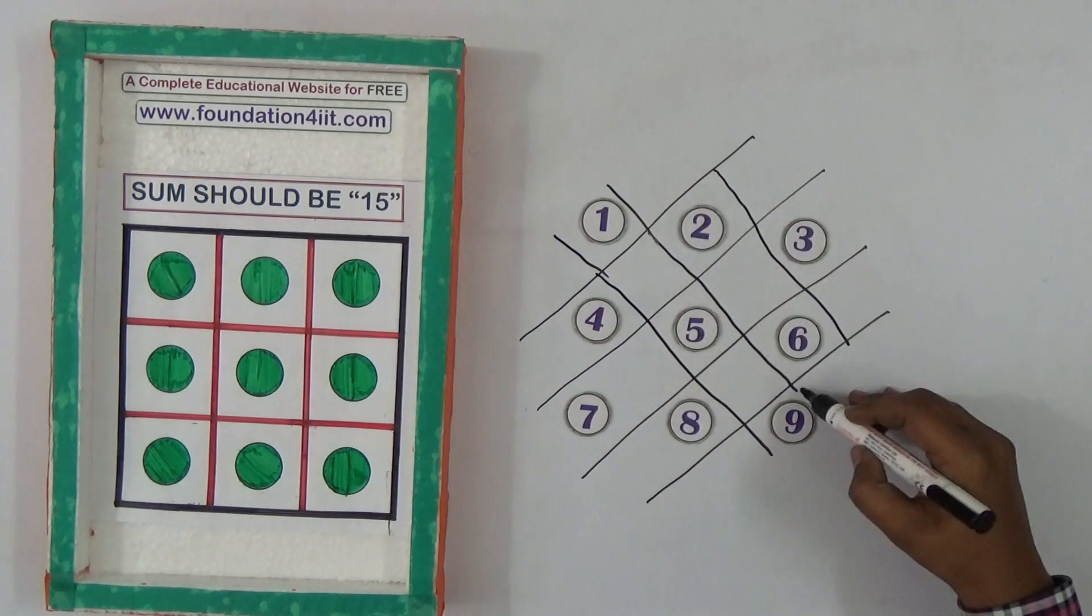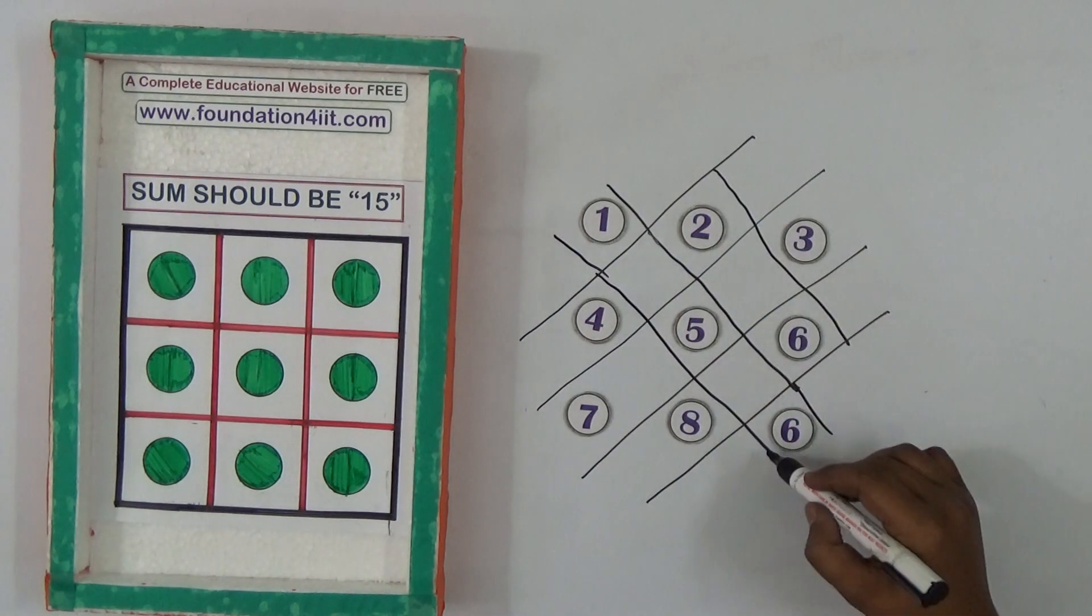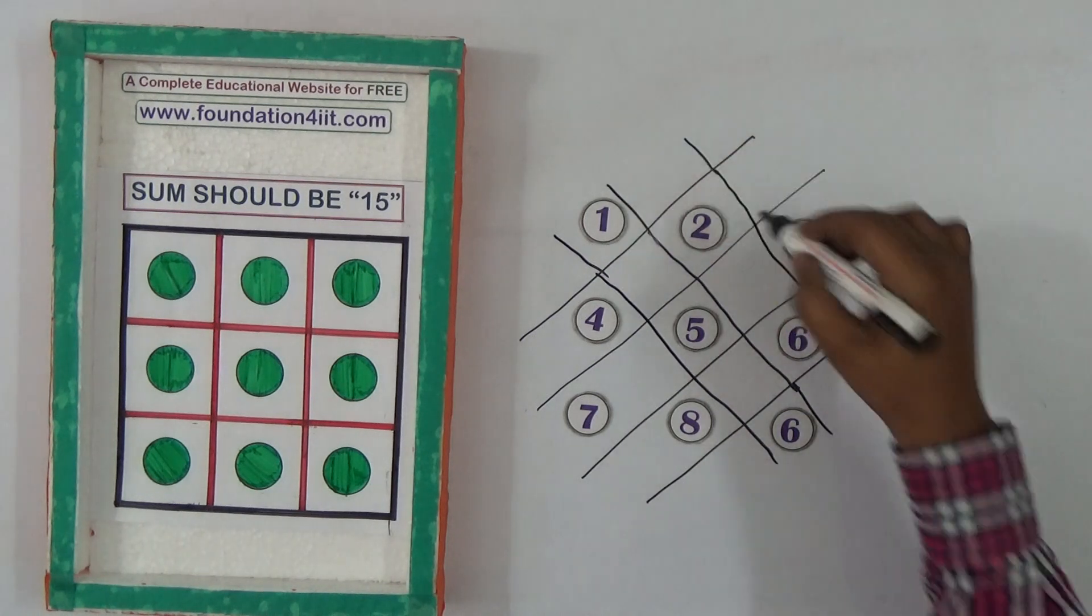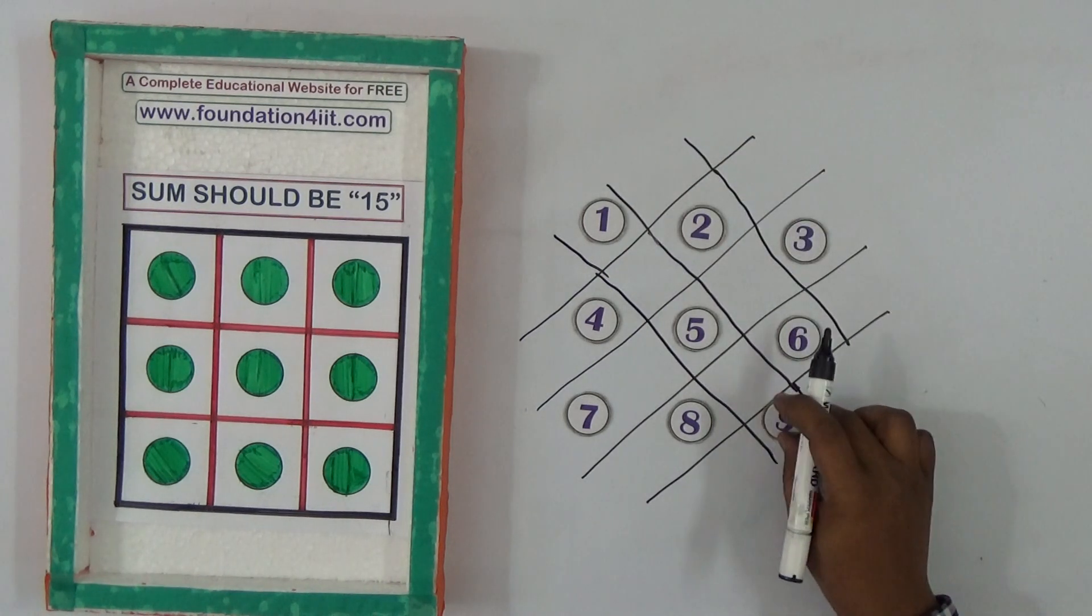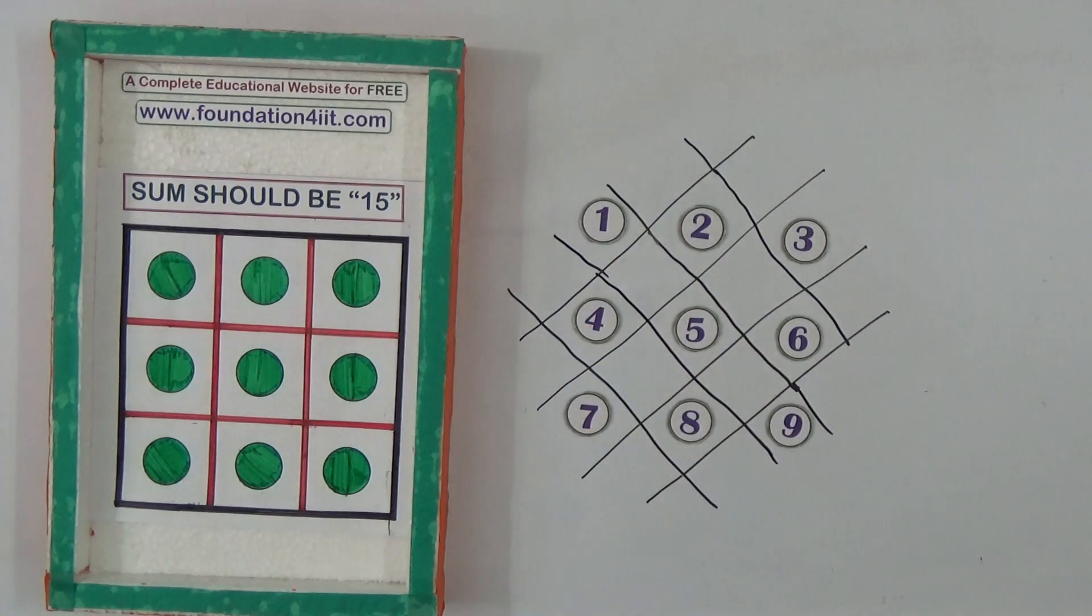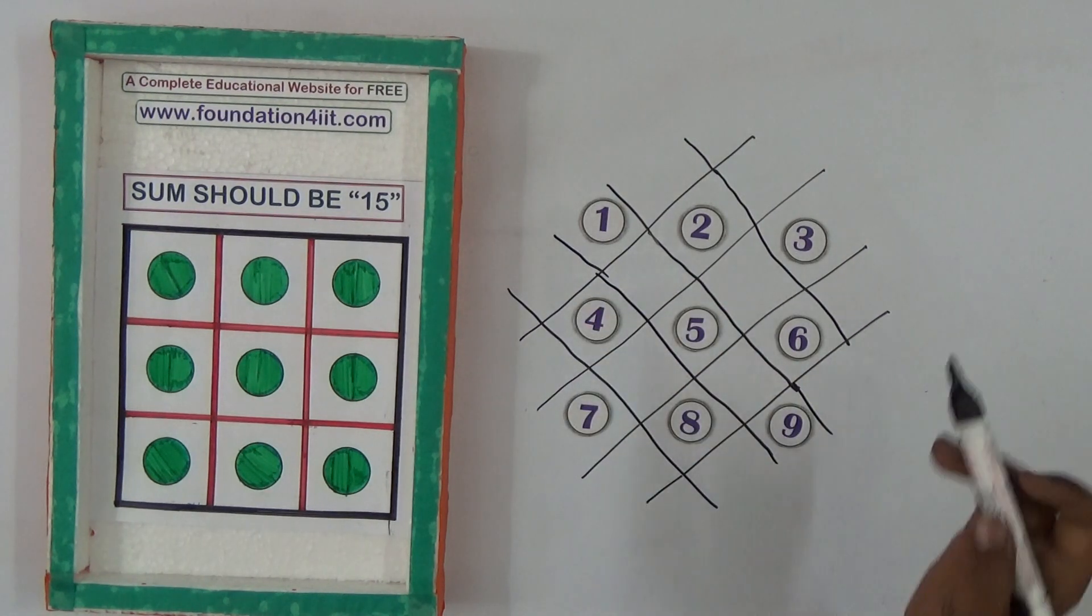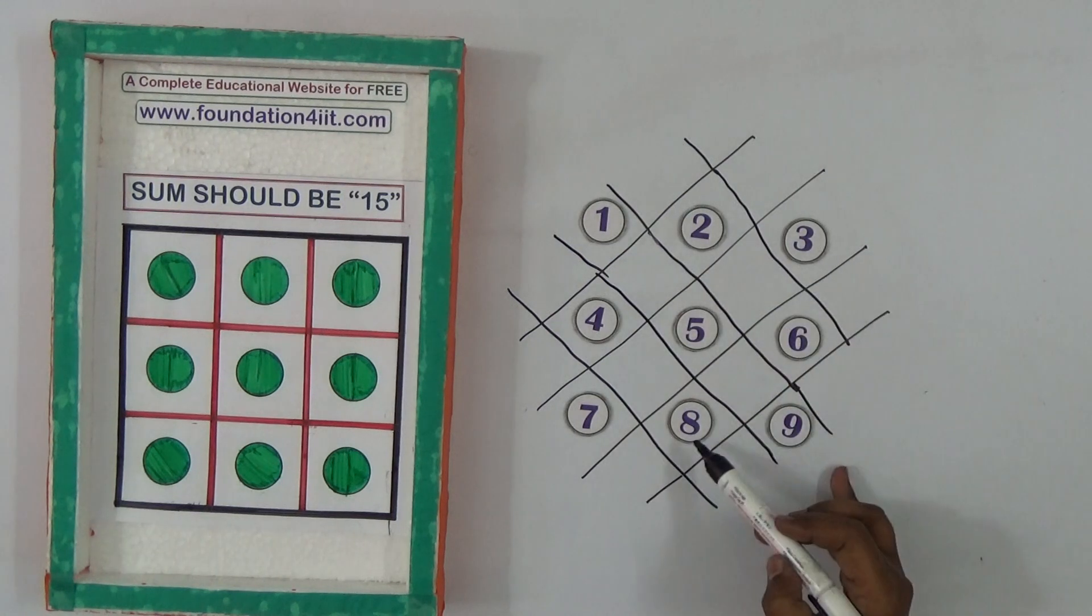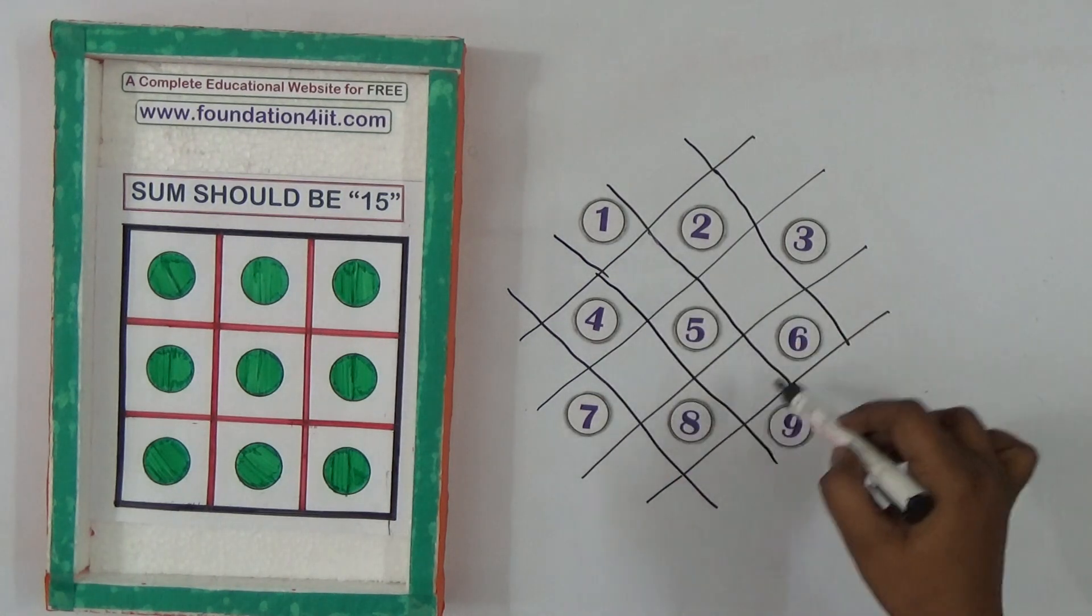This is the straight lines. So this is the line, right? Then observe here, 2, 6, 8, 4, 5. This middle 5 should not change.